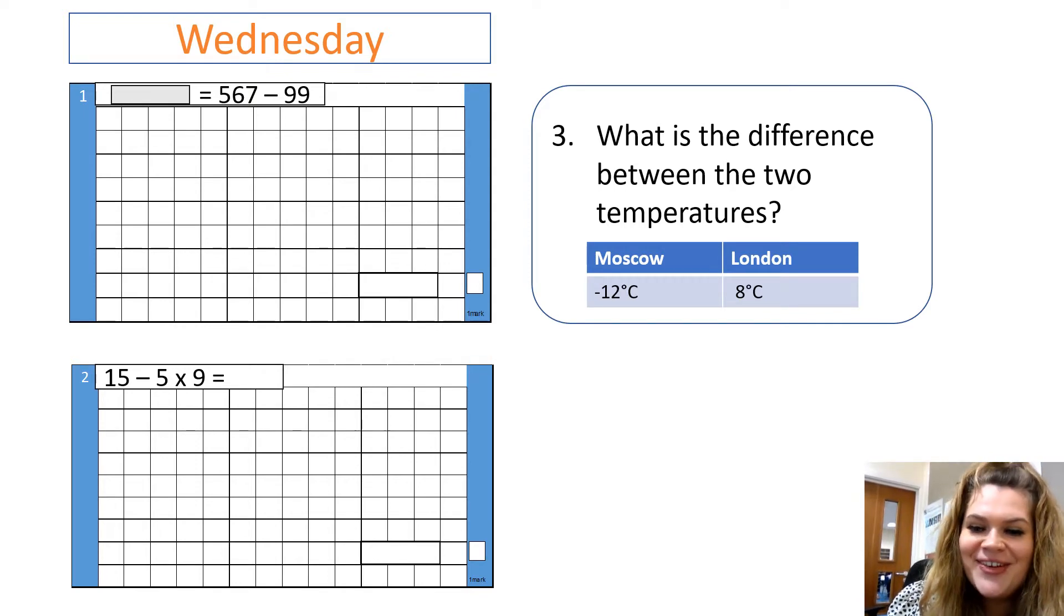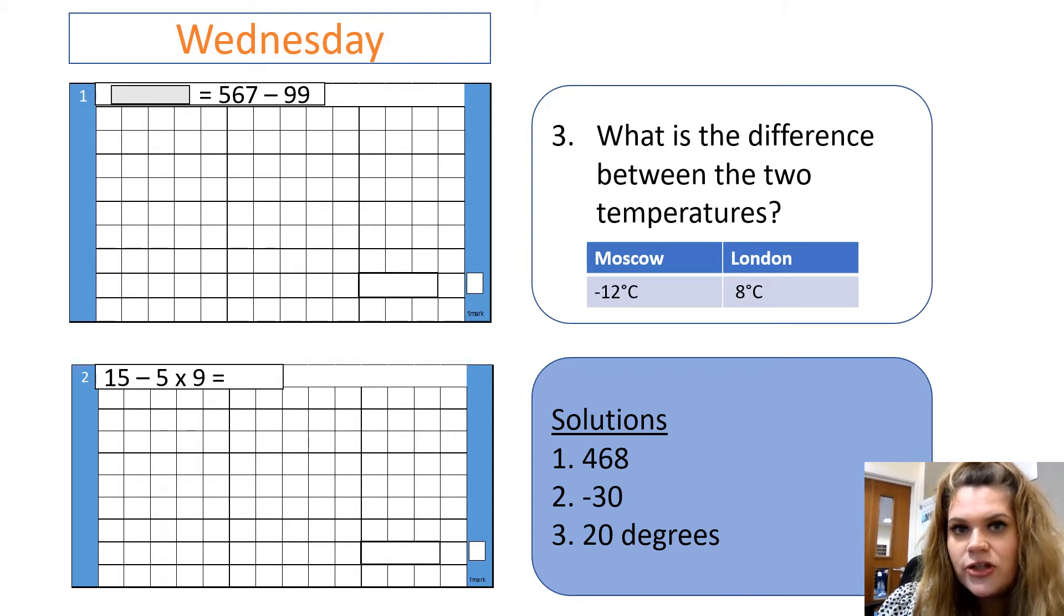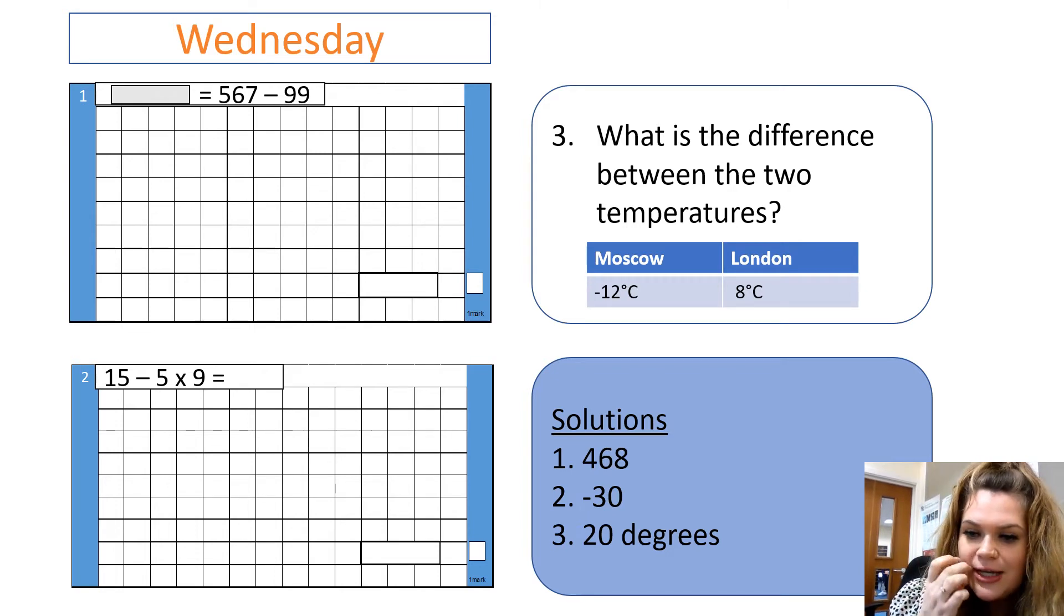Right, okay, let's have a look at our answers. Our solutions. Our first question, we have got 567 and we're taking 99 away. Now, rather than do the column subtraction method, very easy, in your head, I would do 567 subtract 100 because 100 is just one more than 99. I would get the answer then of 467 and then I need to add one on, which would give me the answer of 468.